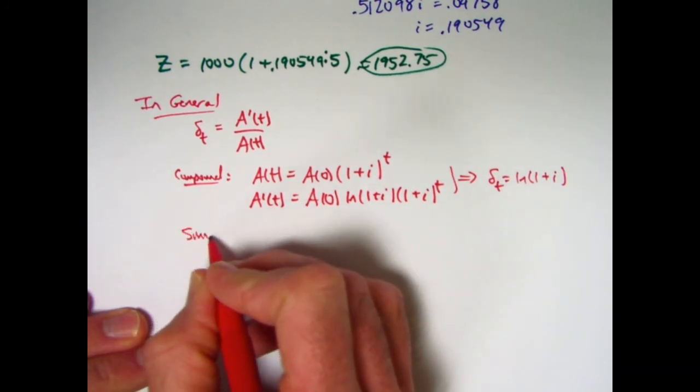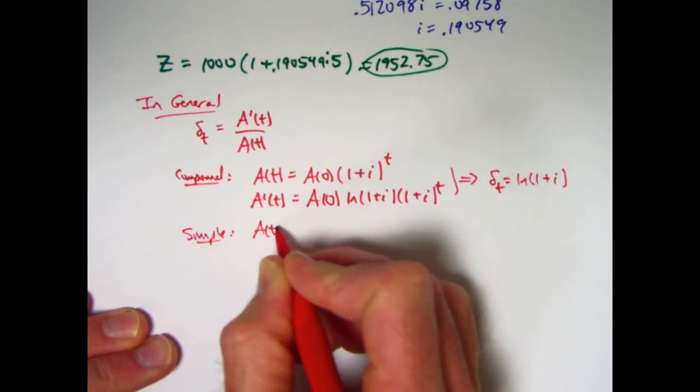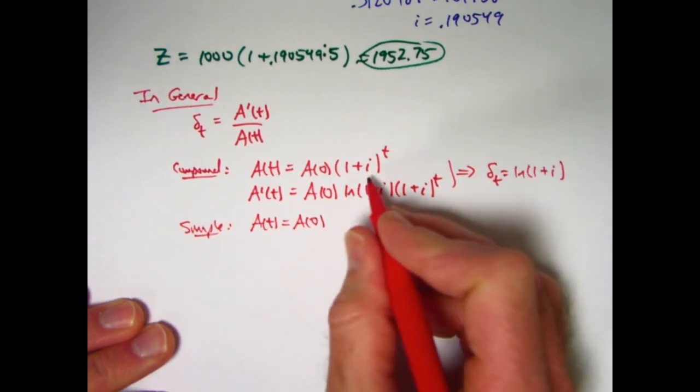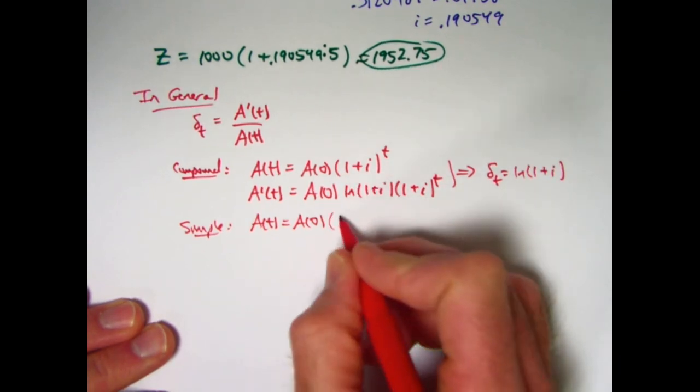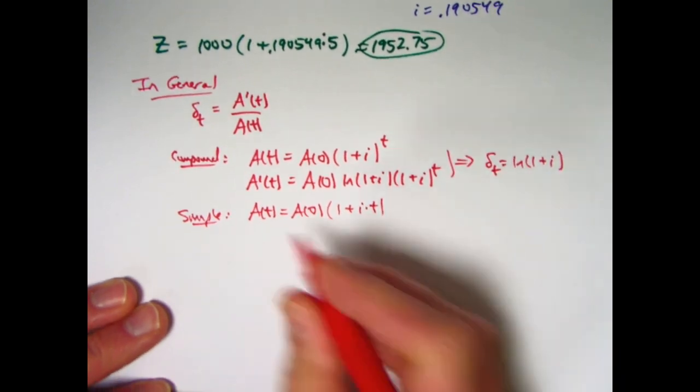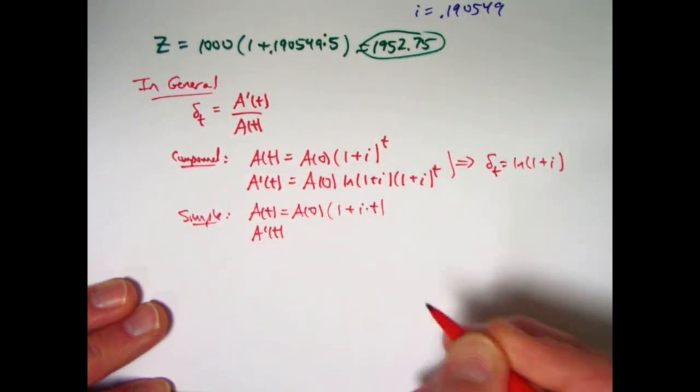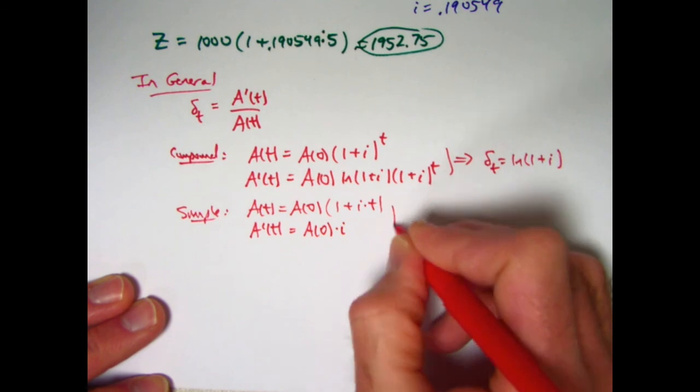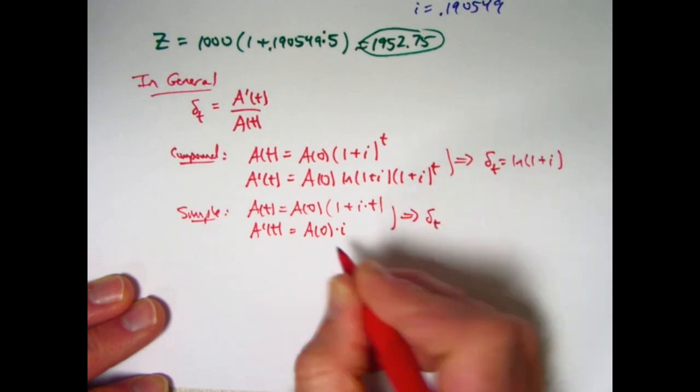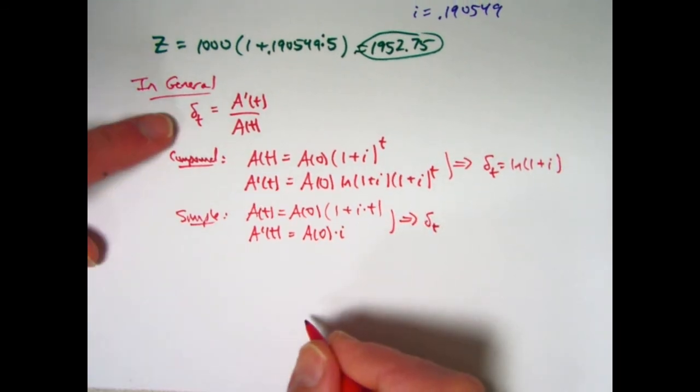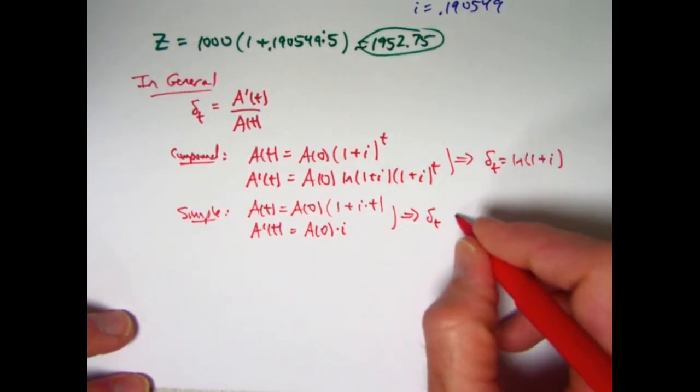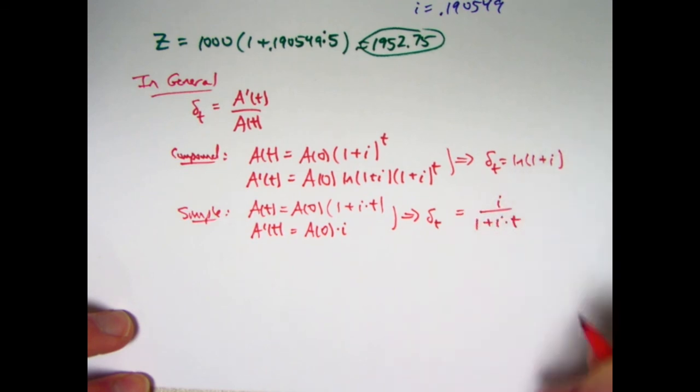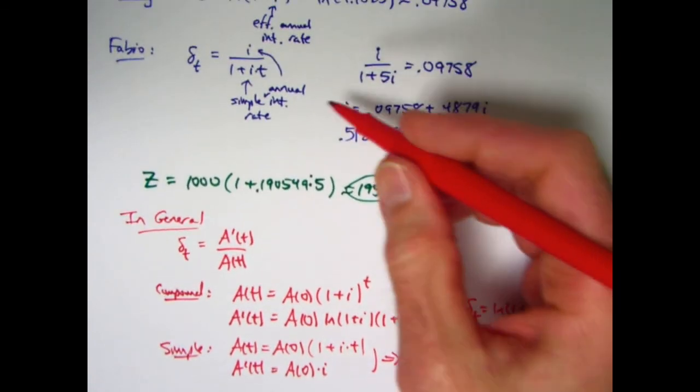For simple interest, the formula for capital A of T is that it equals A of 0, A of 0 again is just the starting amount, times not 1 plus I to the T power, but instead 1 plus I times T. The derivative of this, if you think about this, this is a linear function, is going to be A of 0 times I. So now take the ratio, A prime divided by A, using this fact up here. The A of 0's are going to cancel, the starting amount doesn't matter. You get I over 1 plus I times T, which is the exact same formula that we used up here.